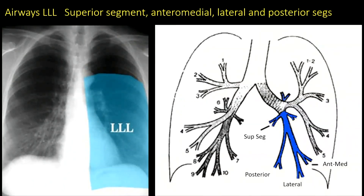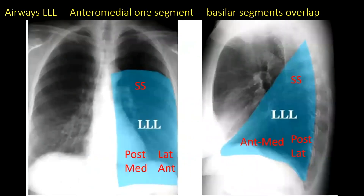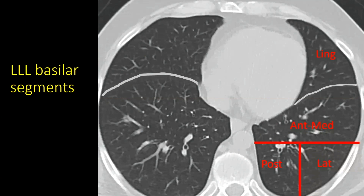The left lower lobe is different from the right lower lobe as well. There is still a superior segment. The anterior medial segment is combined — the heart is in the way, so there's not enough room to have a separate anterior and medial. There's also a posterior and lateral. On the lateral view, you can see the major fissure forming the anterior border of the left lower lobe. The superior segment is clearly identified on either PA or lateral chest, but the basilar segments overlap on both views, though you can work it out if you have both. A CT scan drawing shows the approximate location of the anterior medial segment, the posterior segment, and the lateral segment, with the major fissure separating the lower lobe from the lingular lobe.